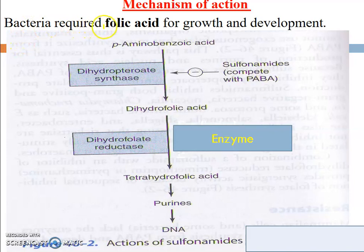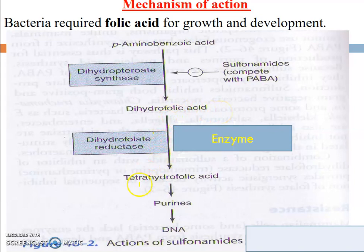Mechanism of action: bacteria require folic acid for growth and development. In this mechanism, para-aminobenzoic acid (PABA) is converted into dihydrofolic acid in the presence of the dihydropteroate synthase enzyme. This dihydrofolic acid is then converted into tetrahydrofolic acid, or folic acid, in the presence of dihydrofolate reductase enzyme. Tetrahydrofolic acid converts into purines and DNA, which are responsible for bacterial synthesis. This is the metabolic pathway.